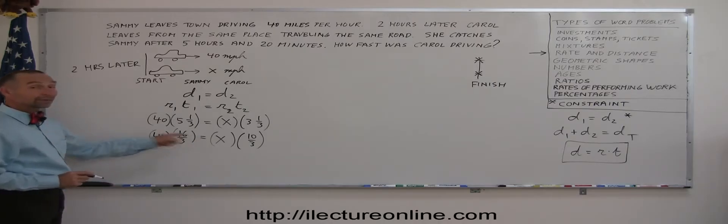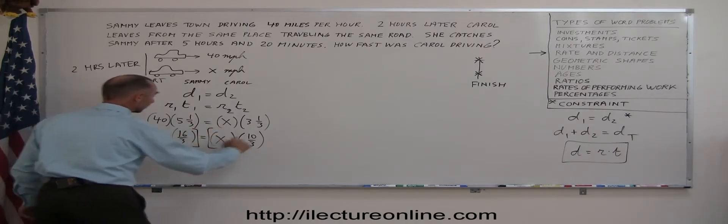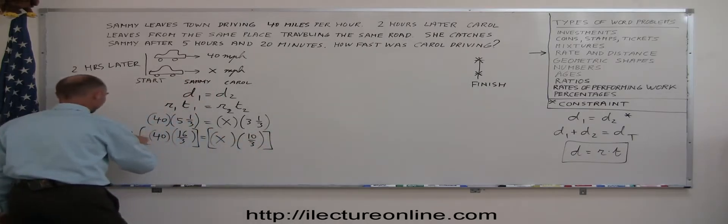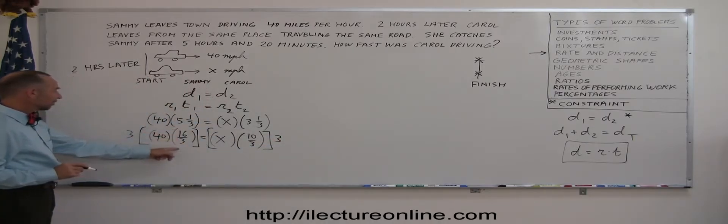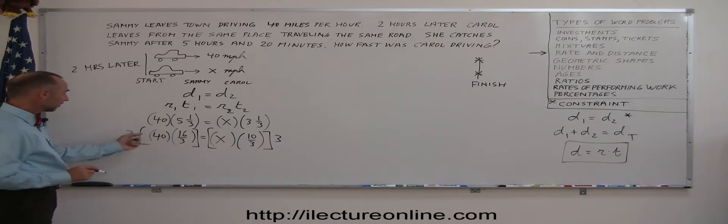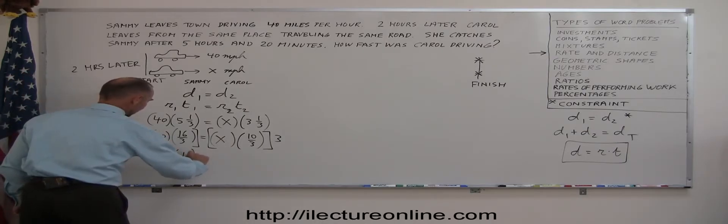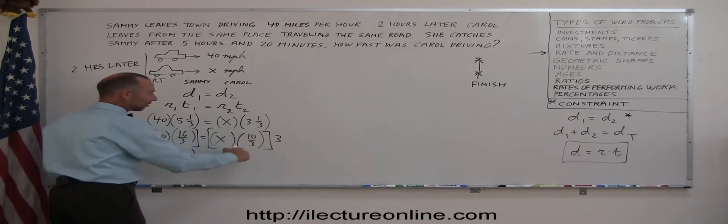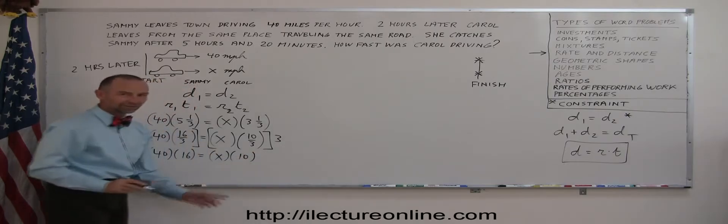Now I can go ahead and get rid of the fractions by multiplying both sides by the lowest common denominator. In this case, that is 3. So I multiply the left side by 3 and the right side by 3. So 3 times 16 thirds, the 3's cancel out and I end with 40 times 16 equals. And 3 times 10 thirds, the 3's cancel out here, I get x times 10. Of course, that's the same as 10x.